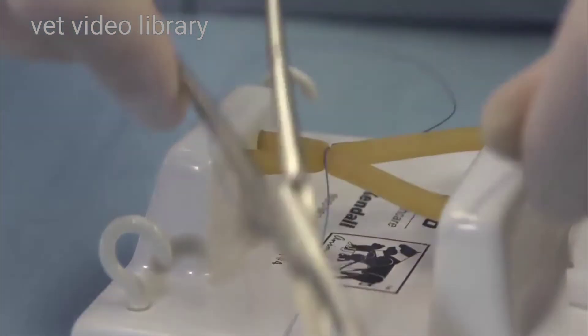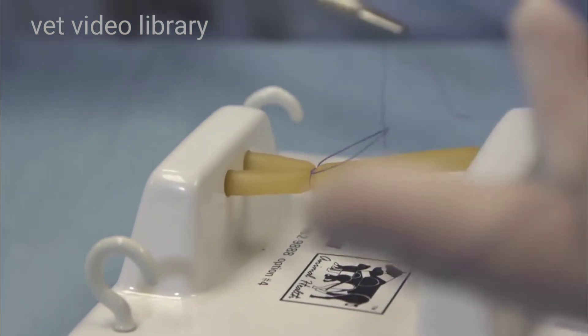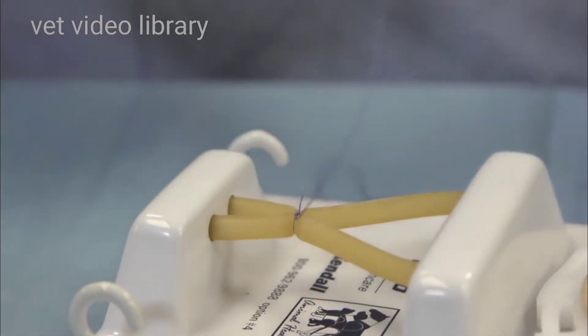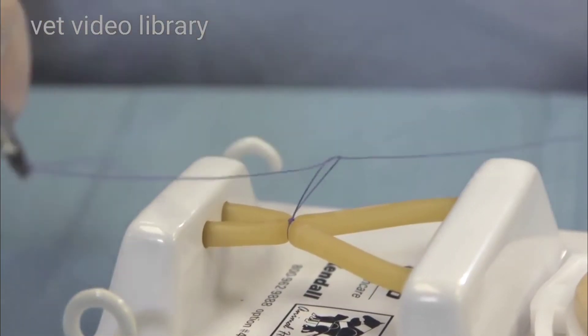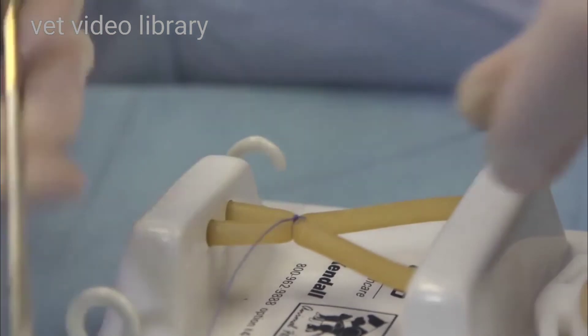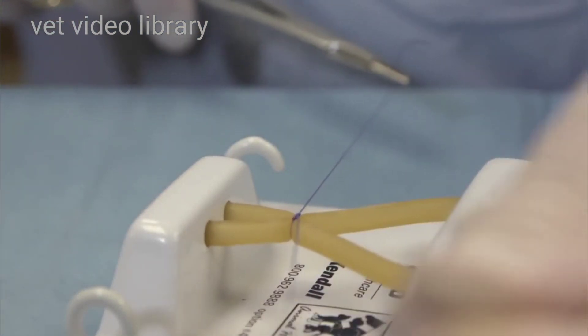And now I put a simple throw on top of that, and now that's a complete Miller's knot. On top of that, you can add simple square knots for added security.